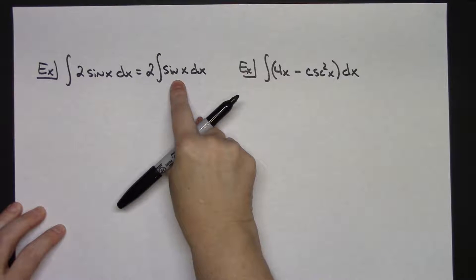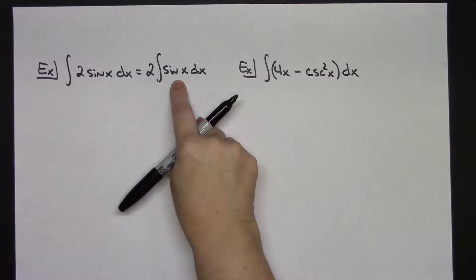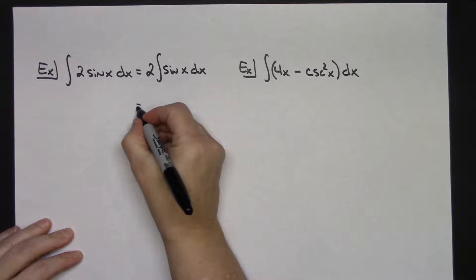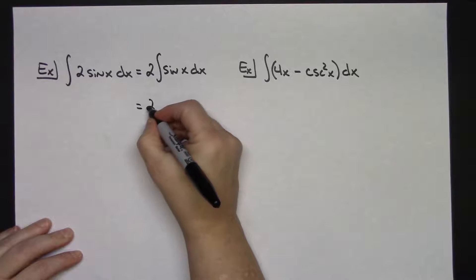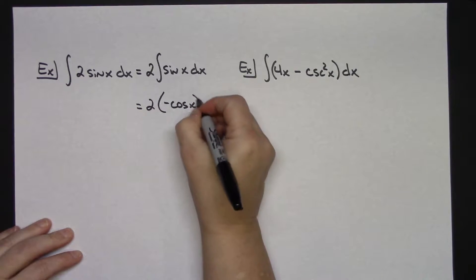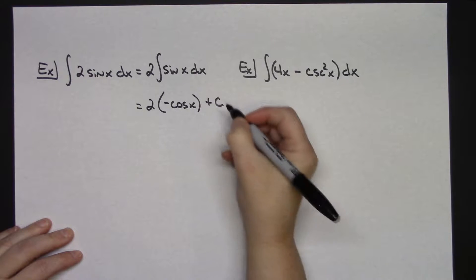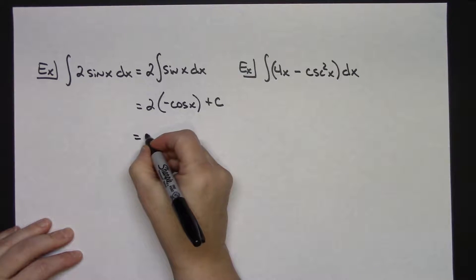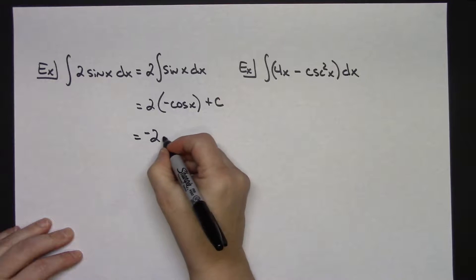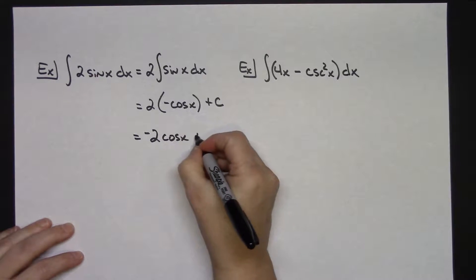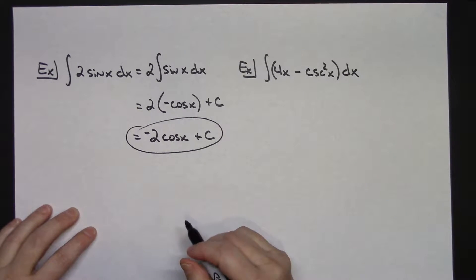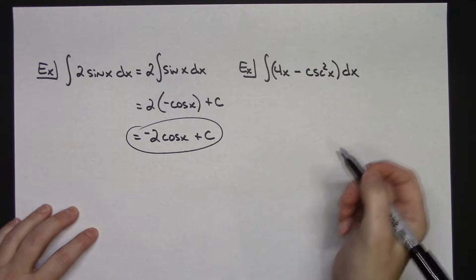We know that the integral of sine is negative cosine. So once I integrate it, my integral sign goes away, and I will have 2 times negative cosine x, and then plus c - because you don't want to forget the plus c. Then you're going to want to clean that answer up a little bit and make it look like negative 2 cosine x plus c. So some very simple integration with our beginning trig functions here.